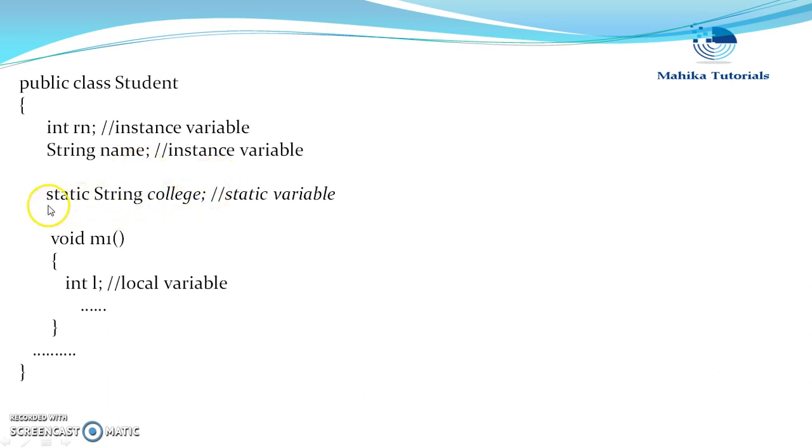Now if we use the keyword static to declare a variable at class level then it is termed as static variable, and these non-static variables are known as instance variables because for every instance there will be a different copy of these variables.